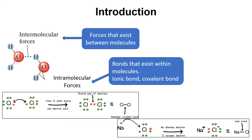An ionic bond forms when one atom loses an electron and another atom gains that electron. A covalent bond is due to the sharing of electrons. For example, two chlorine atoms each share one electron, forming a covalent bond between them.